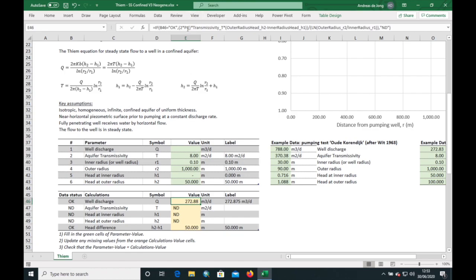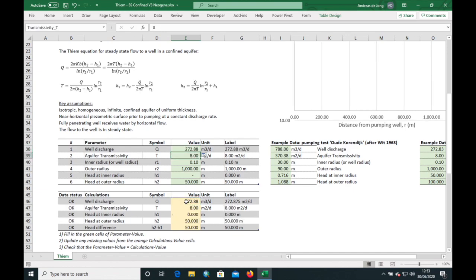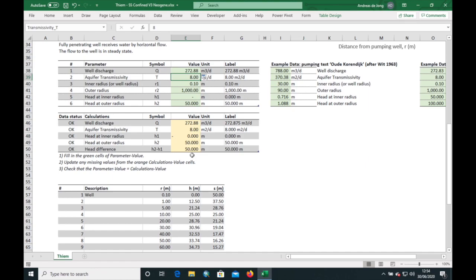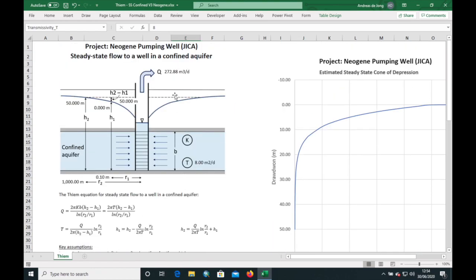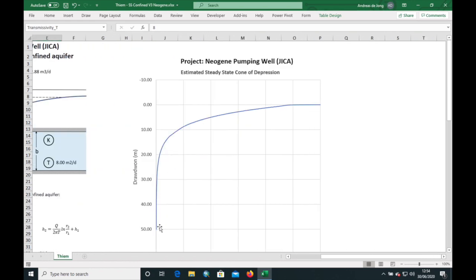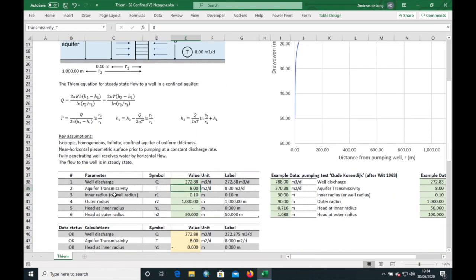Now if we look down at our calculations, there are enough parameters now to calculate the well discharge based on the Thiem equation, and we can feed this back into our parameter table. Equals Q, enter, and then you will see that all the other parameters have been calculated as well, and it should be the same as what we have here. Here is our discharge. You can see it here and also on the right is a chart of the cone of depression. Let me quickly go down to the table where it's calculated.